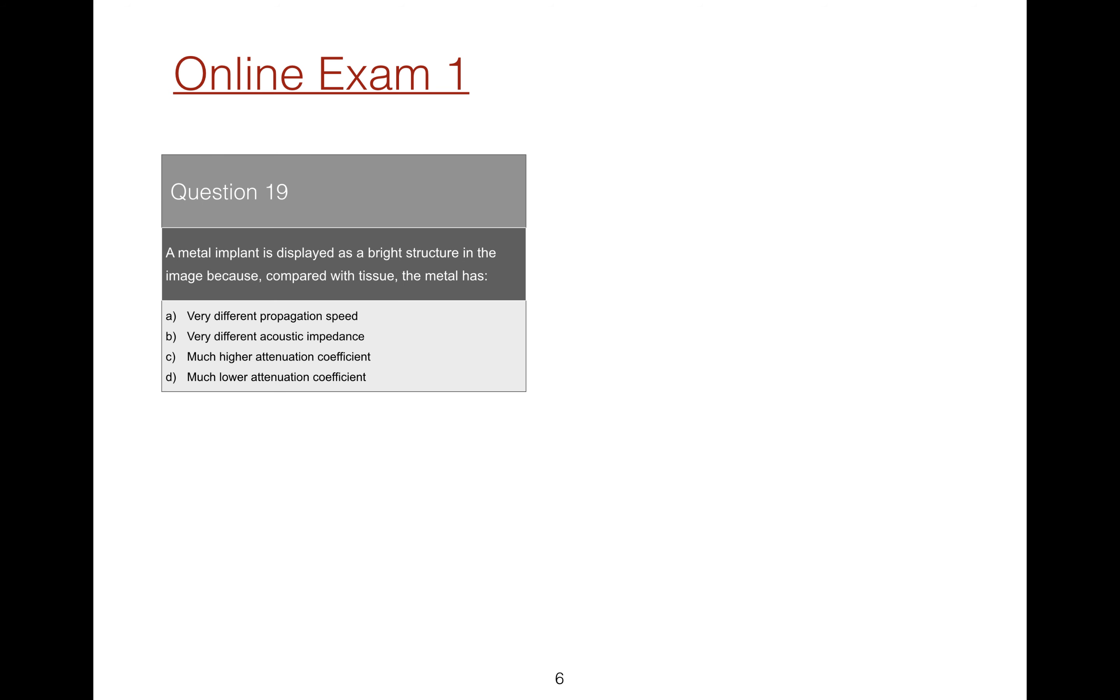Question 19: A metal implant is displayed as a bright structure in the image because, compared with tissue, the metal has what? Well, metal appears bright because it is a strong reflector. The degree of brightness is related to acoustic impedance.